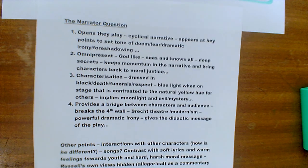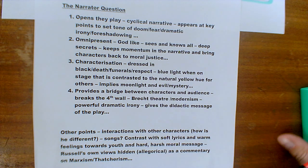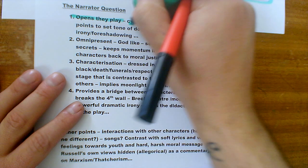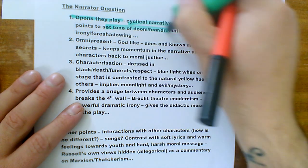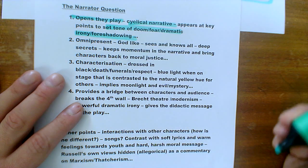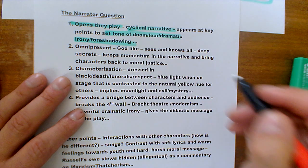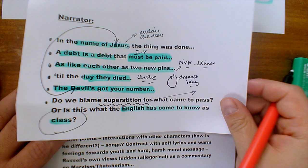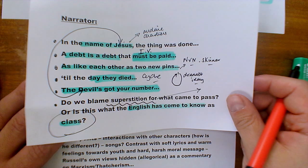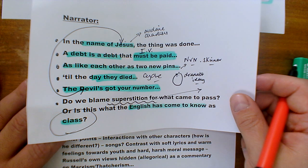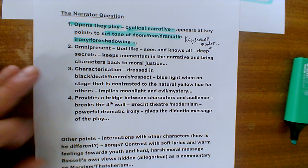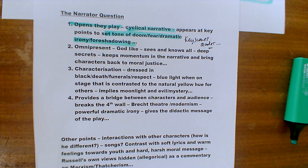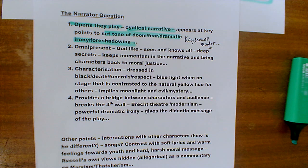In terms of this essay plan, I might be saying about the narrator: it's important that he opens the play, and I want to use phrases like 'cyclical narrative' — that he appears at key points and sets a tone of doom, fear, dramatic irony, and dramatic foreshadowing. Don't stress too much about learning quotes word for word. If you can't, you can do something called paraphrasing — basically reinterpreting the quotations. Accurate quotations are ideal, but paraphrasing is fine as well.